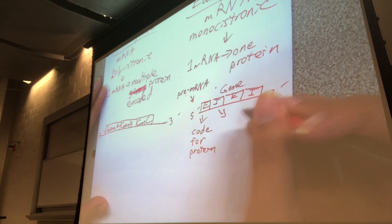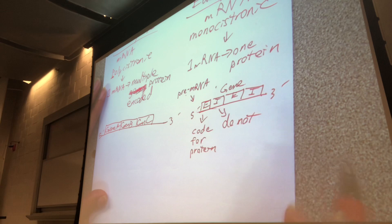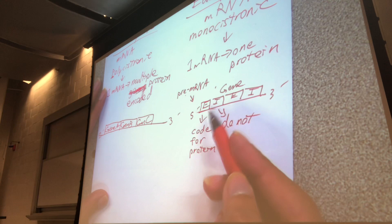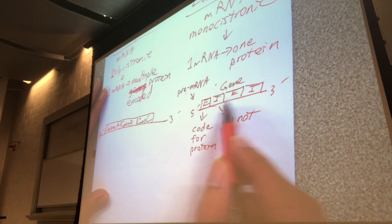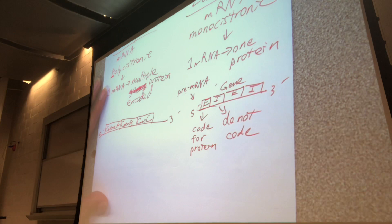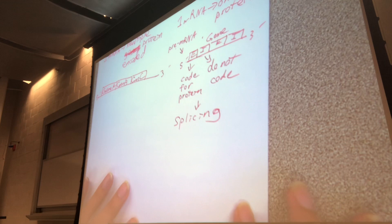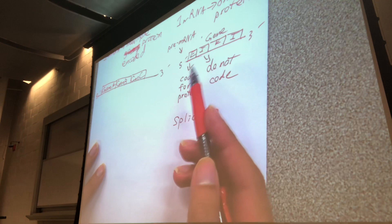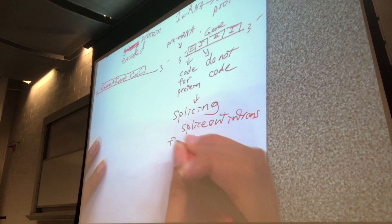This pre-mRNA — one of the many differences between eukaryotic and prokaryotic — is that eukaryotic has a mixture of exons and introns, while prokaryotic only has sequences that encode for proteins. In eukaryotes, introns are interspaced between exons. Because of that, in eukaryotes there's an extra processing step called splicing, where you splice out the introns and fuse together the exons.